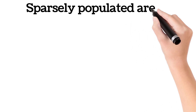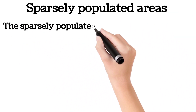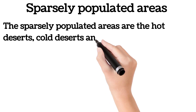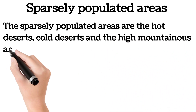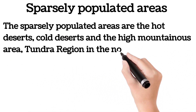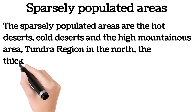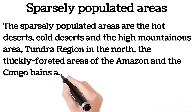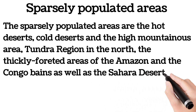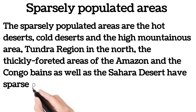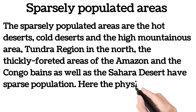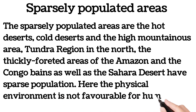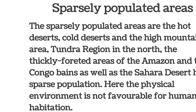Sparsely populated areas include the hot deserts, cold deserts, and high mountainous areas. The tundra region in the north, the thickly forested areas of the Amazon and the Congo basins, as well as the Sahara Desert have sparse population, as the physical environment is not favorable for human habitation.